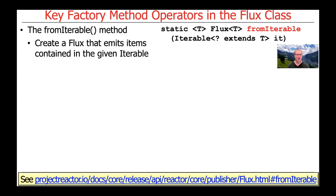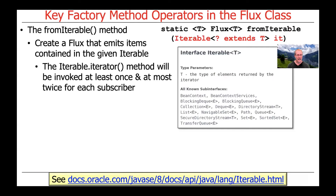Let's now turn our attention to another factory method called fromIterable. As the name suggests, this particular method creates a Flux that emits items contained in the given Iterable. Interestingly, the Iterable's iterator method will be invoked at least once and potentially at most twice for each subscriber. This doesn't really matter for built-in iterators from Java's collection framework, but if you make your own iterator, you have to remember that its iterator method may get called more than once.